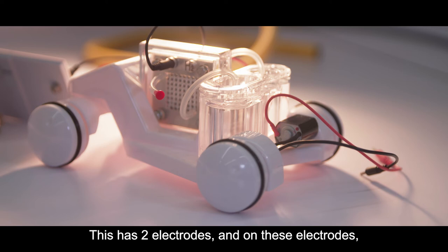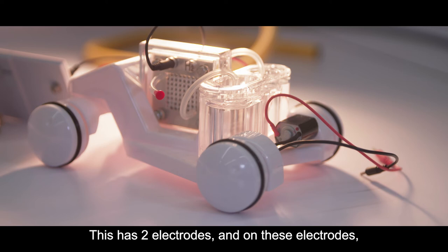And to do that, we use a water electrolyser. This has two electrodes, and on these electrodes, oxygen is evolved and hydrogen is evolved. And we can collect the hydrogen and oxygen separately and store them for future use.